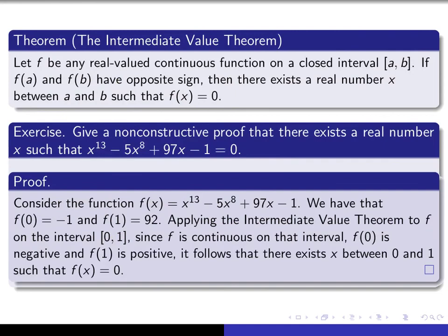And now I have to verify all of the hypotheses, that it's continuous, and that these have opposite signs. So I say, since f is continuous on that interval, and here we're using the fact that any polynomial function is continuous, f(0) is negative and f(1) is positive, it follows that there exists x between 0 and 1 such that f(x) equals 0. So once again, we've managed to prove the existence of such an x even though we can't figure out exactly what value it has. We just know that there has to be one.